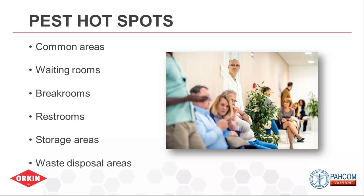Break rooms or places where employees store food are pest hot spots entirely within your control. If there's a fridge, there's a great chance pests will try to get in. Sanitation around food storage areas is of utmost importance. Storage areas for supplies and janitorial closets are also risky — mops that aren't correctly hung are a surefire way to eventually develop a small fly or dark-eyed fruit fly problem, with little flies suddenly buzzing around.